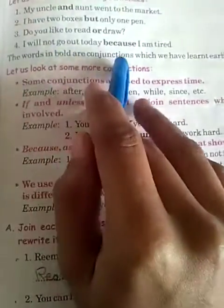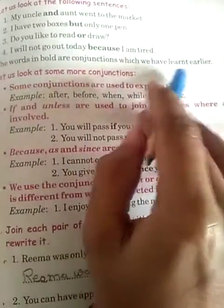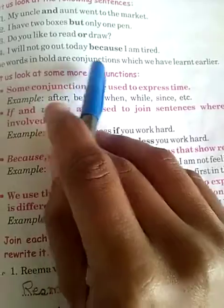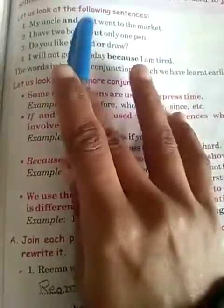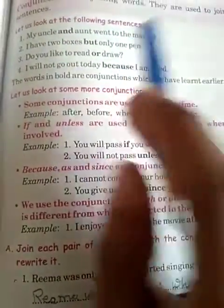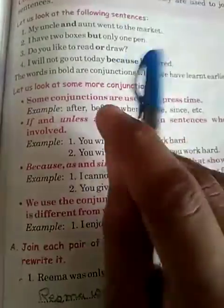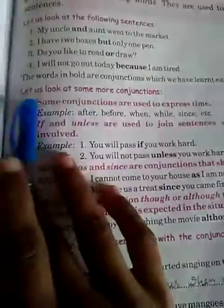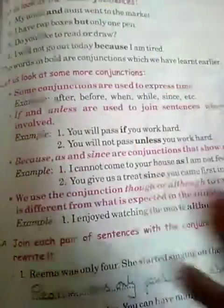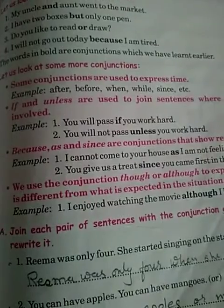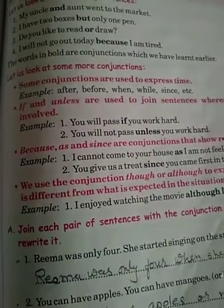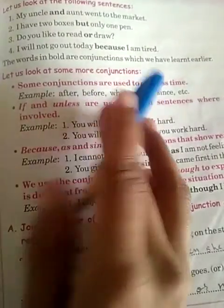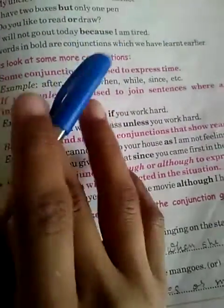The words in bold are conjunctions which we have learned earlier — jo humne pehle padh chuke hain, first, second, third standard mein. Now let's look at some more conjunctions jo aap nahi padh chuke, woh dekhte hain.